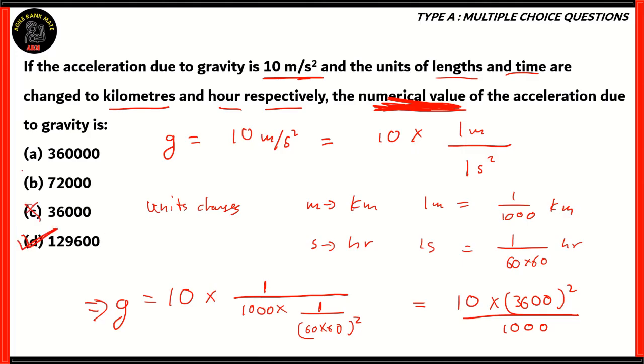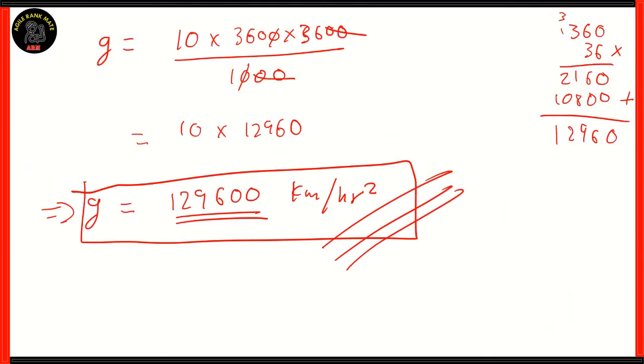So, option D is the correct option among the following. The others show 36,000, 72,000, and 36,000. And then, you know, infinite sum amount of zeros, which is, again, incorrect. The correct calculation is to substitute the meters and second squared into kilometers and hours squared. So, therefore, the value of g in the end will be 129,600 kilometers per hour squared. Why squared? Because this is acceleration.